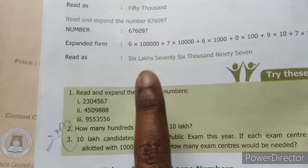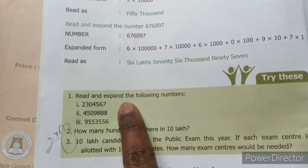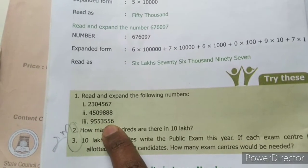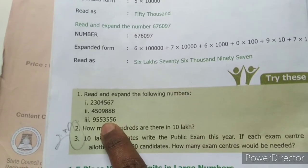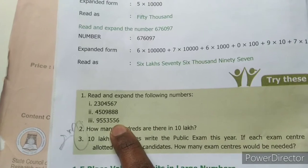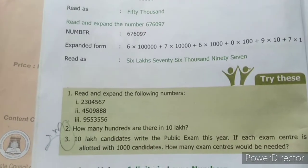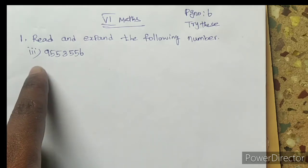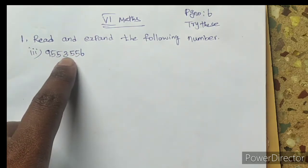Okay, now we are going to solve the third sum: 95 lakhs 53,556. First we are going to see how to write this given number in expanded form, then reading form.